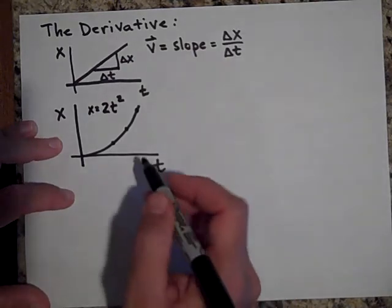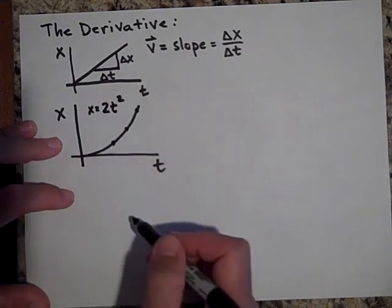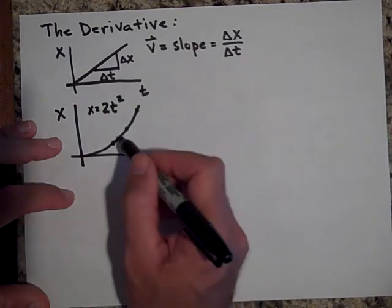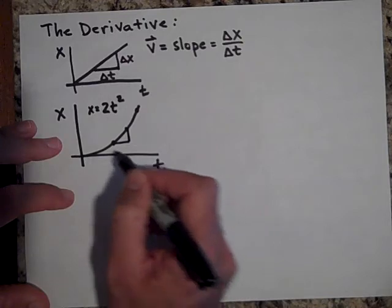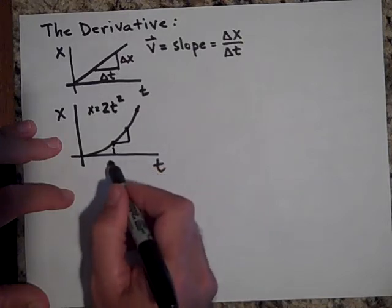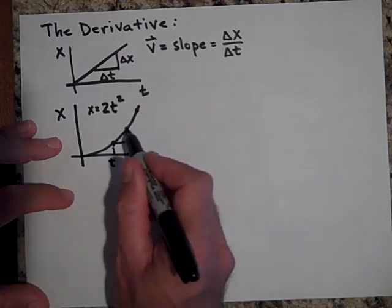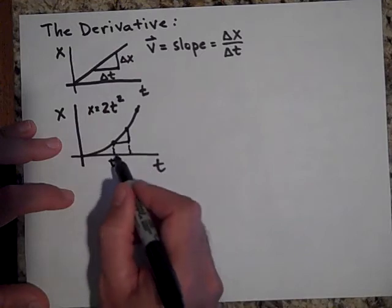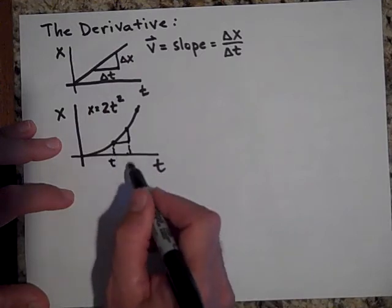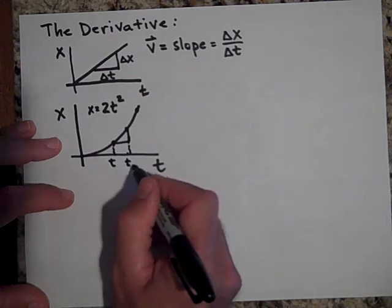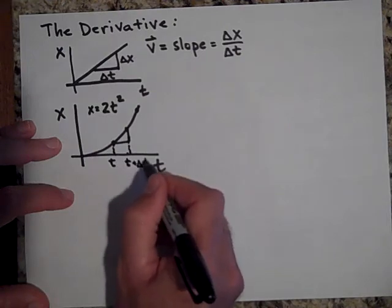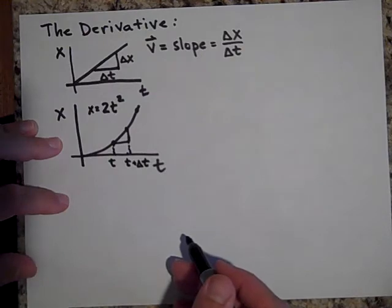Okay, if I'd like to know, say, the slope right here, then what I'm going to do is I'm going to do a rise over run, maybe of these two points. And let's call this one t. And let's call this one, if this is delta t from there to there, then this would be, this other point would be t plus delta t. That's what that would be. This right here, we're going to call that delta x.